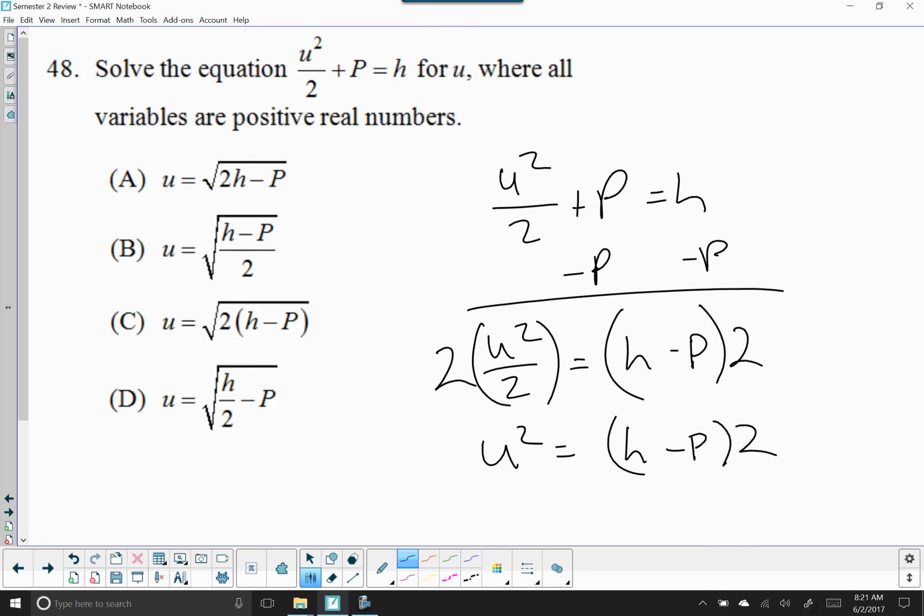We can just leave it like this. And then what undoes squaring something is square rooting something, so we get u equals the square root of h minus p times 2.